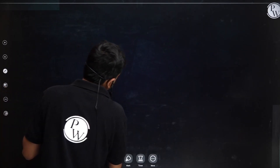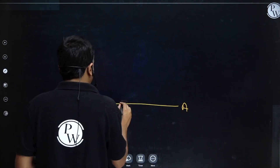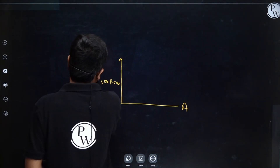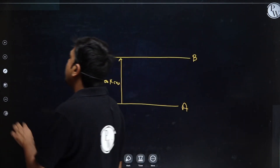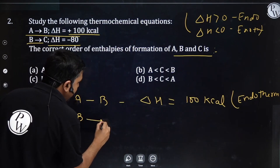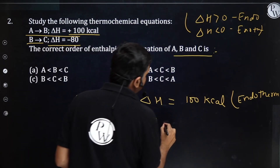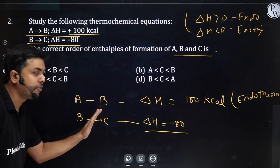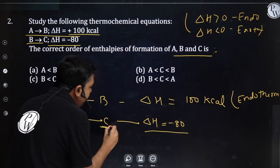Let's draw the energy level diagram. Starting with the enthalpy level of A, after absorbing 100 kcal, B is at a higher energy level. Then B converts to C releasing 80 kcal, so C is at a lower energy level than B but still higher than A. Therefore the enthalpy order is: B has maximum enthalpy, then C, then A.